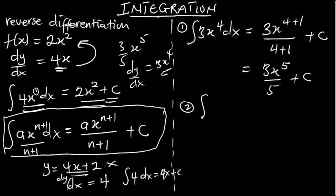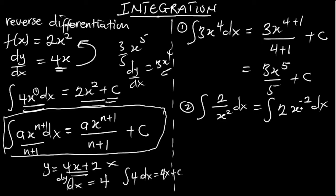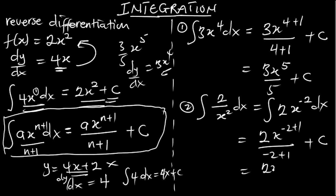The same way, find the integral of 2/x² dx. Rewrite it as 2x^(−2) dx. Applying the rule, increase the power by 1: 2x^(−2+1) over (−2+1) plus C, which gives 2x^(−1) over (−1) plus C. This simplifies to negative 2 over x plus C. So this is the integral of that expression.